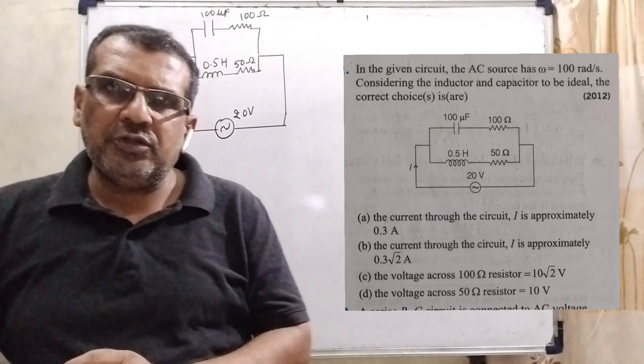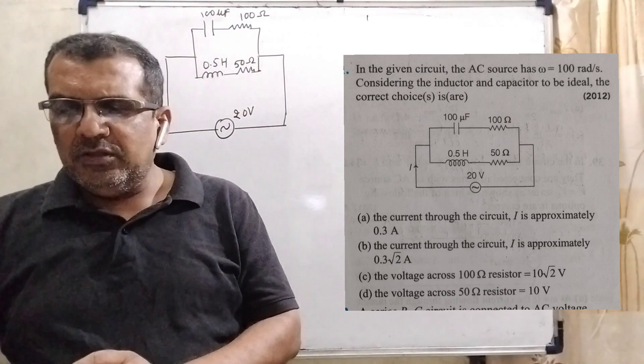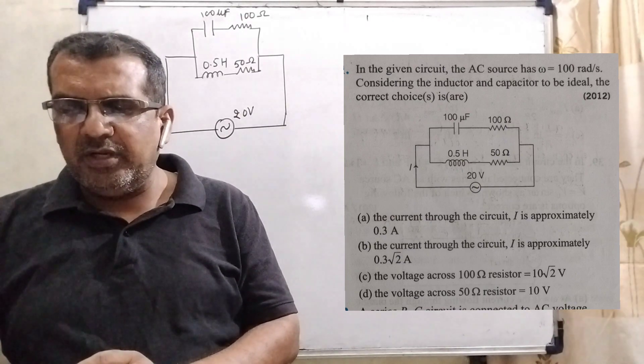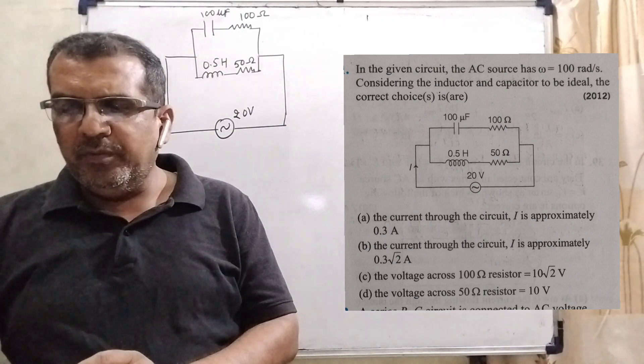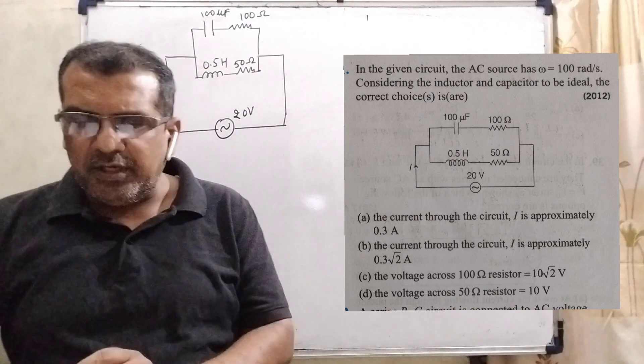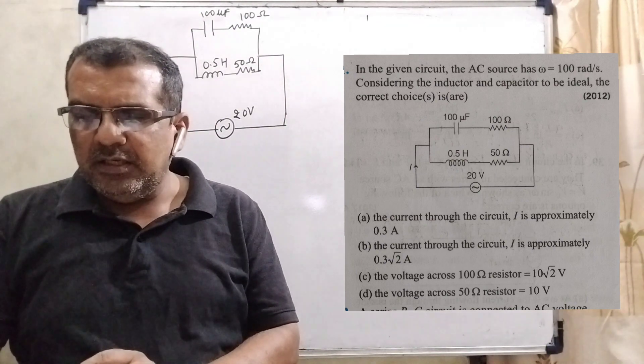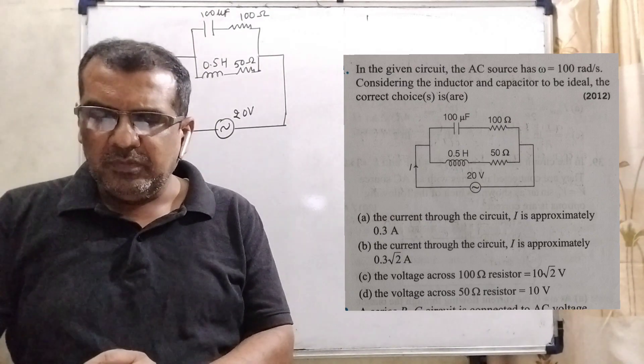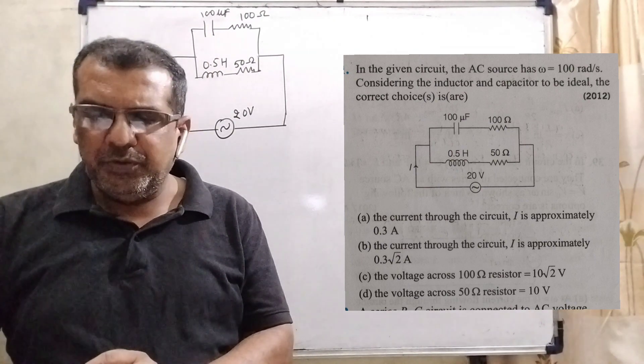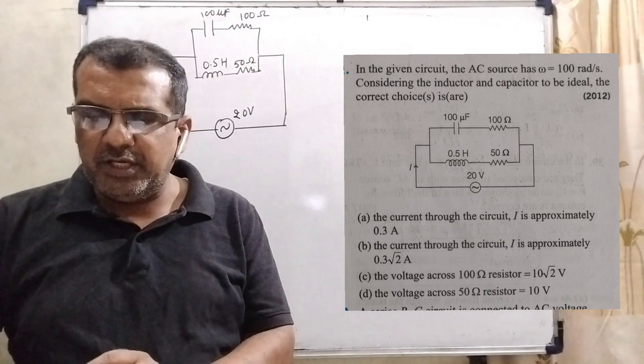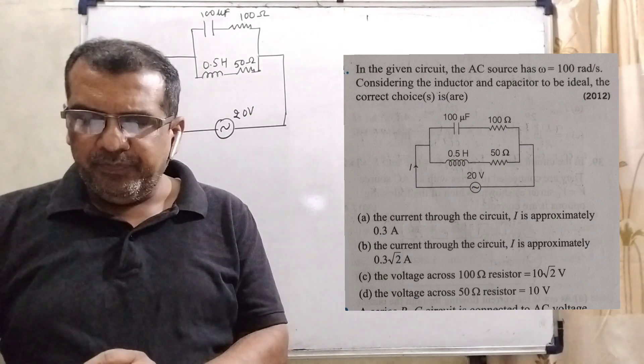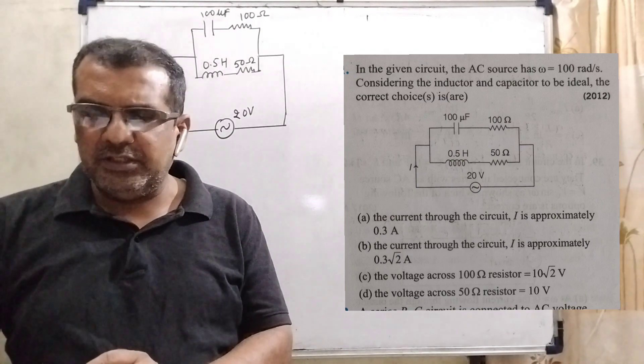Now here is the question, a multiple choice question. In the given circuit, the AC source has omega equal to 100 radian per second. Considering the inductor and capacitor to be ideal, the correct choice is. Option A: the current through the circuit I is approximately 0.3 ampere. Option B: the current through the circuit I is approximately 0.3 root 2 ampere. Option C: the voltage across 100 ohm resistor is 10 root 2 volt. And option D: the voltage across 50 ohm resistor is 10 volt.